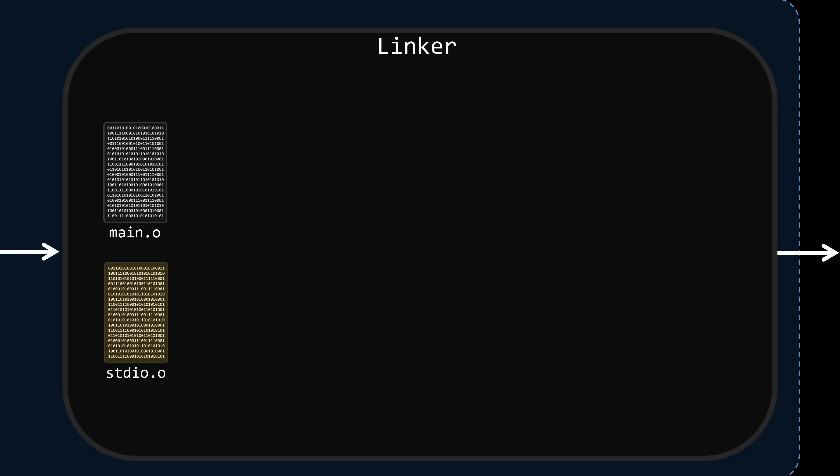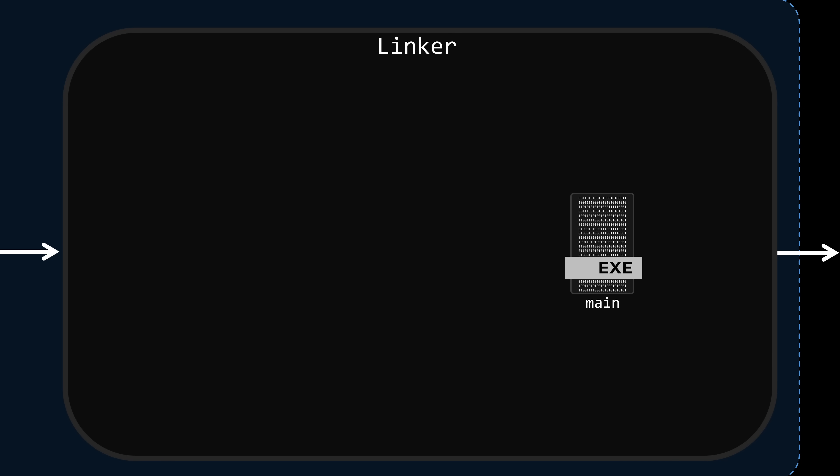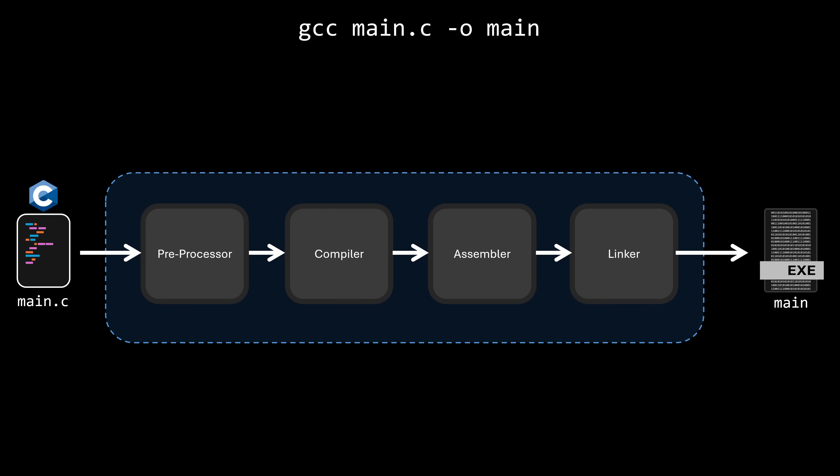This brings us to the final step: linking. At this stage, we may have multiple object files — some from our code, others from external libraries we included during development. The linker's job is to combine all these object files into a single self-contained executable. The easiest way is to take the machine code of each required function from the library and copy it into the final executable. This is called static linking — all the library functions our program needs are embedded directly into the output file, making everything self-contained and ready to run.